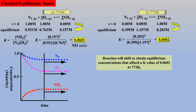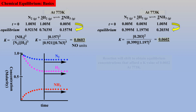Regardless of the amounts of hydrogen, nitrogen, and ammonia added to the reaction vessel, the concentrations will change so that the equilibrium constant of 0.0602 is obtained at this temperature.